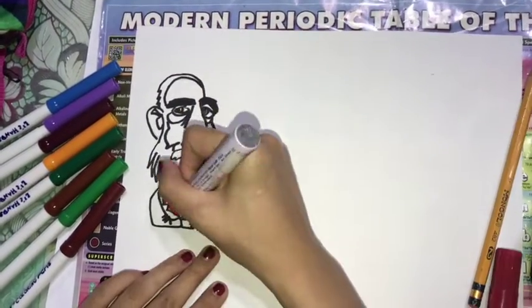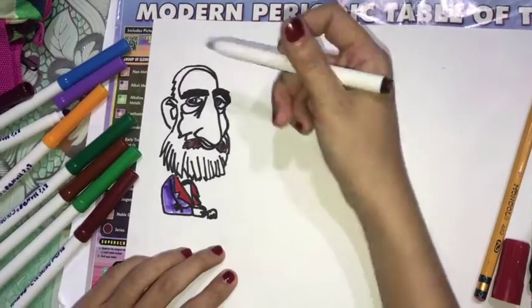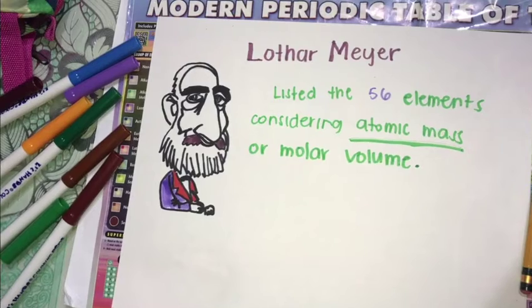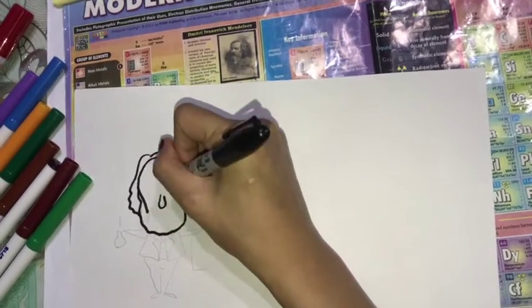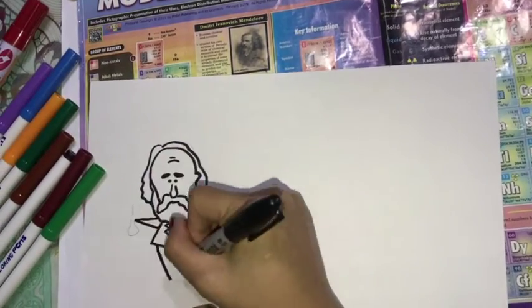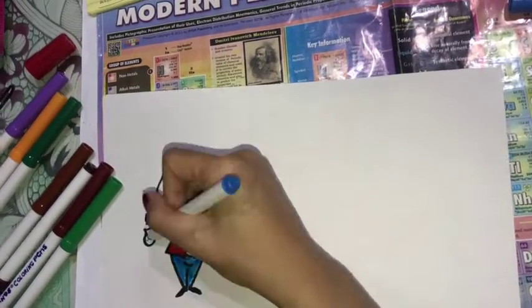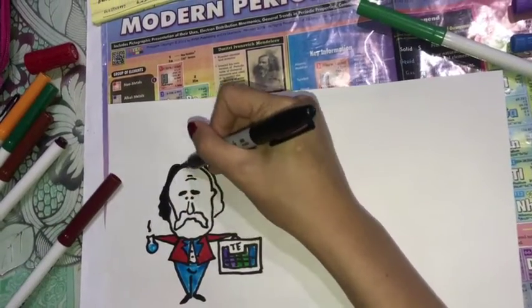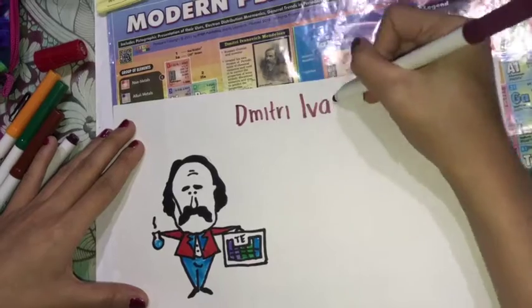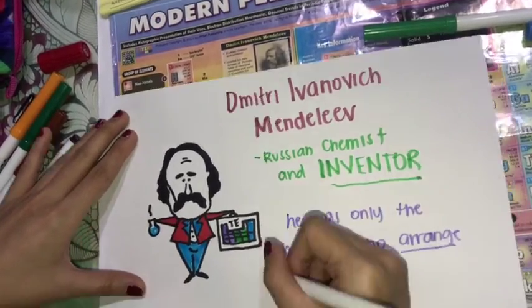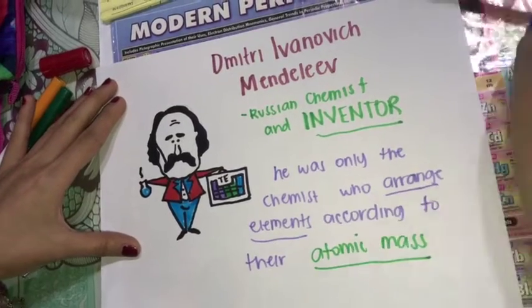Lothar Meyer listed 56 elements considering the atomic mass or the molar volume of the element. Dimitri Ivanovich Mendeleev was the one who arranged elements in accordance to their atomic mass and chemical properties. The periodic law states that the properties of an element vary depending on its atomic weight.